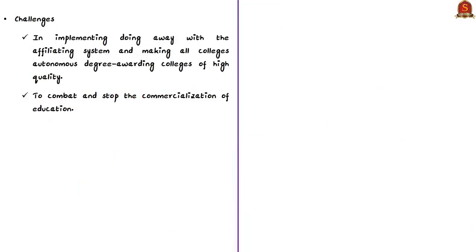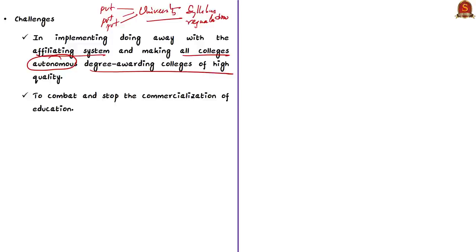The policy also does away with the affiliation system of colleges, wherein most private colleges are attached to government universities for recognition, syllabus, and exams. Over time, this proved to be an inefficient system. The new education policy calls for removing the affiliating system and making all colleges autonomous degree-awarding institutions of high quality — so that every college can give degrees to its own students. This provision is criticized because private colleges may not have the experience or efficiency to become autonomous degree-awarding institutions.